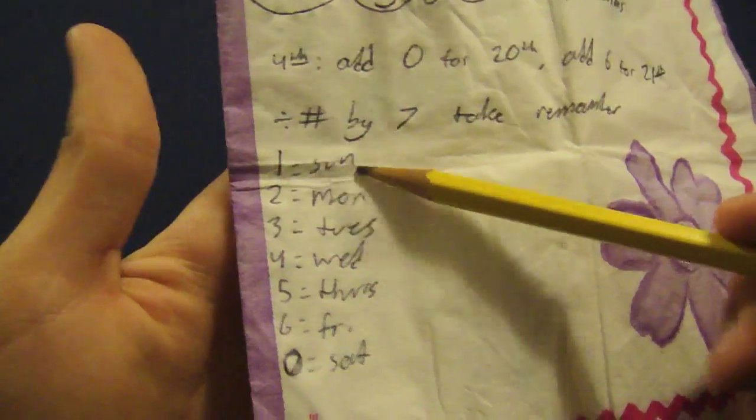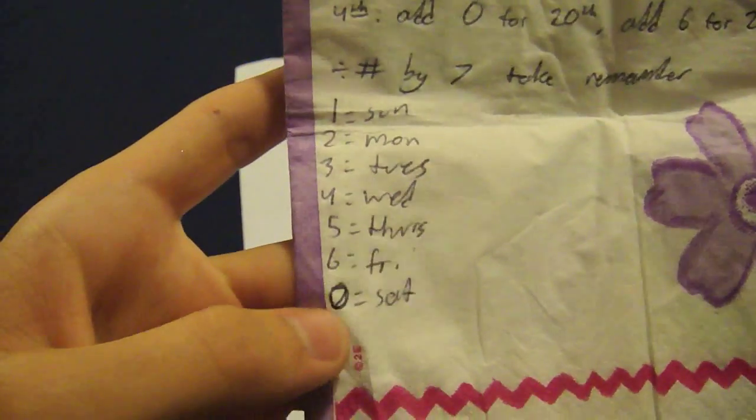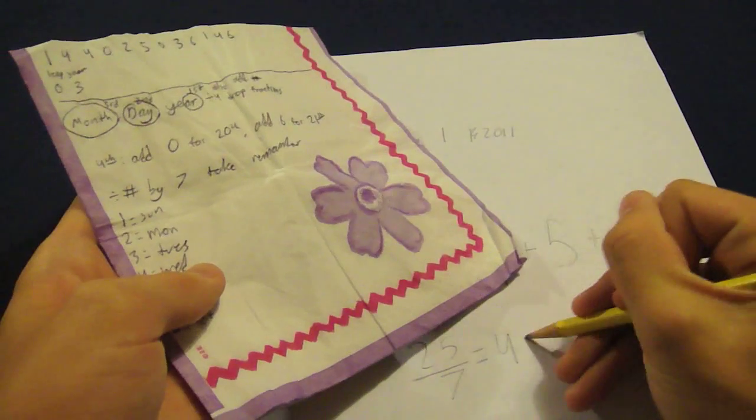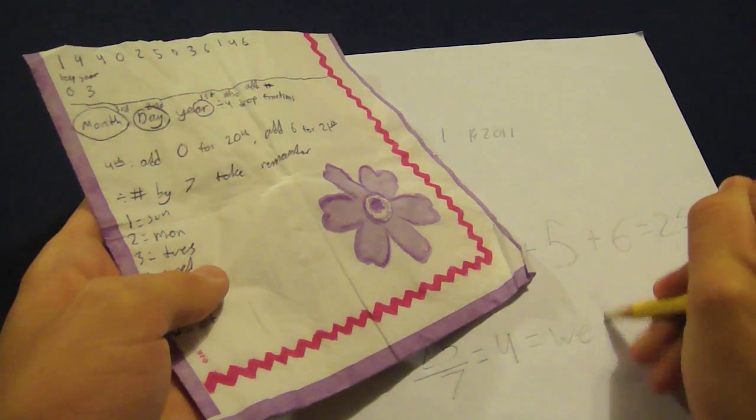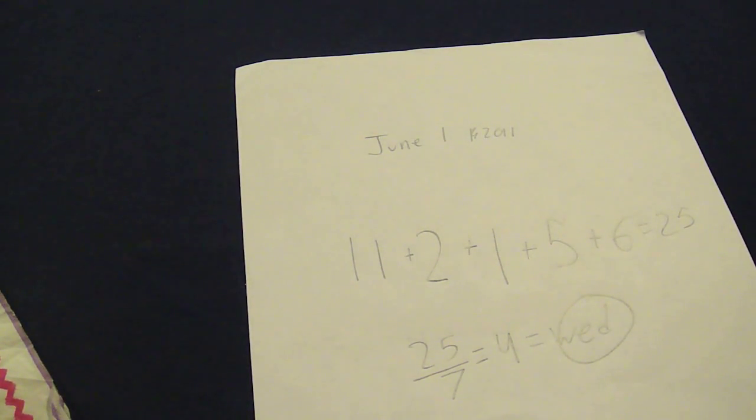And then you refer to this chart over here. It says Sunday, Monday, Tuesday, Wednesday, Thursday, Friday, Saturday. There's a number next to each one and you just have to remember where it starts with Sunday. And when you get to Saturday, it's a 0. So 4, Wednesday. So 4 equals Wednesday. And that is the day that June 1, 2011 will be on. So if you could do this in your head, it's a very cool effect.